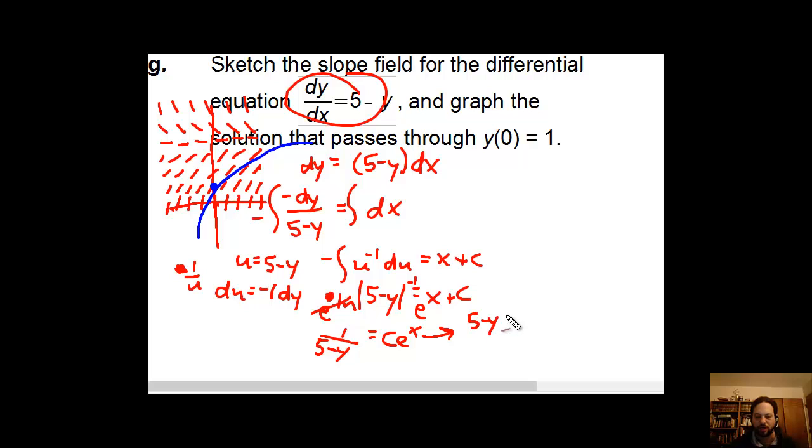If I do want to solve for y here, which I believe I do, I can just reciprocate both sides. So I'll have 5 minus y. I did the reciprocal of the left. If I do the reciprocal of the right, I'm still going to leave c, but it'll be e to the negative x. And from there, hopefully we can figure out that y is simply going to be 5 minus c times e to the negative x.